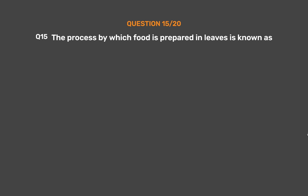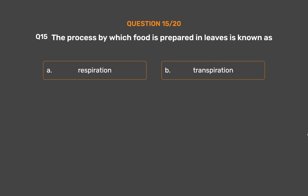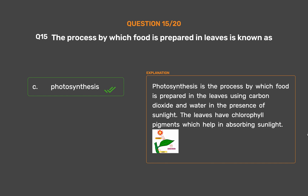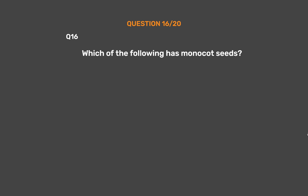Question 15: The process by which food is prepared in leaves is known as — Option A: Respiration, Option B: Transpiration, Option C: Photosynthesis, Option D: Regeneration. The correct answer is Option C, Photosynthesis. Photosynthesis is the process by which food is prepared in the leaves using carbon dioxide and water in the presence of sunlight. The leaves have chlorophyll pigments which help in absorbing sunlight.